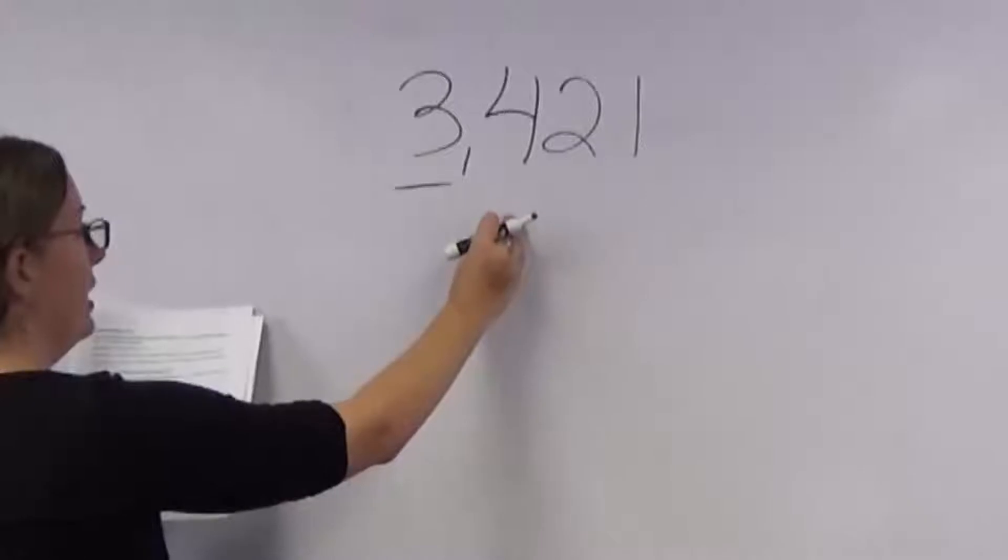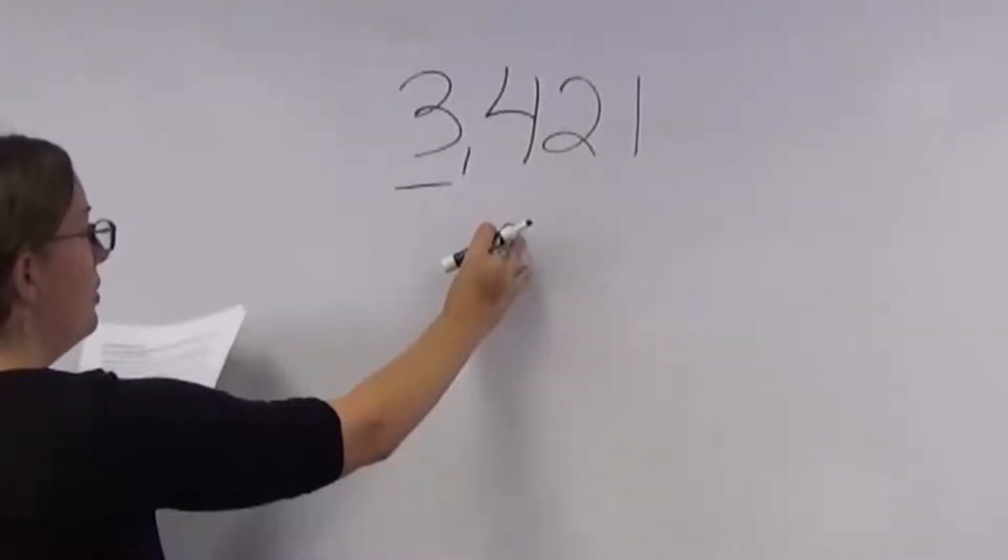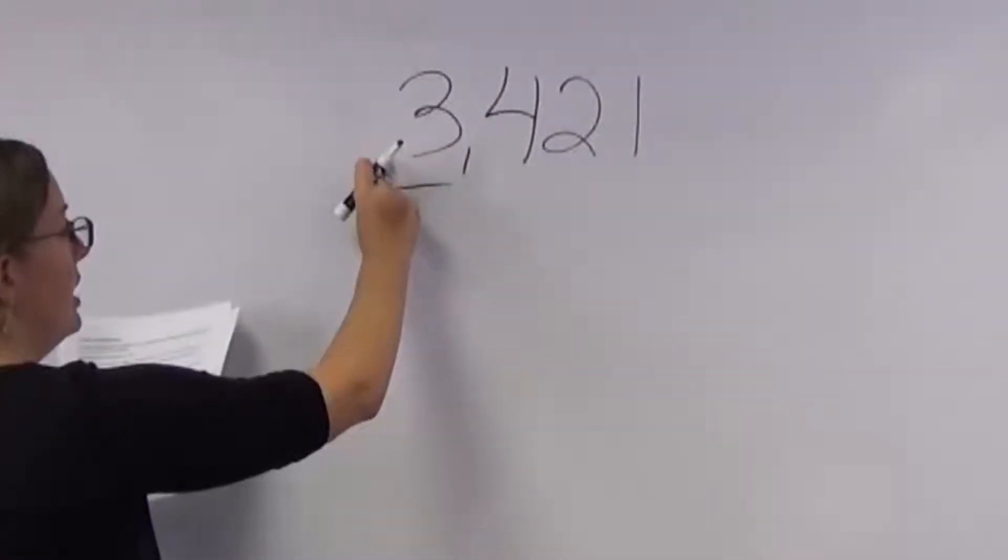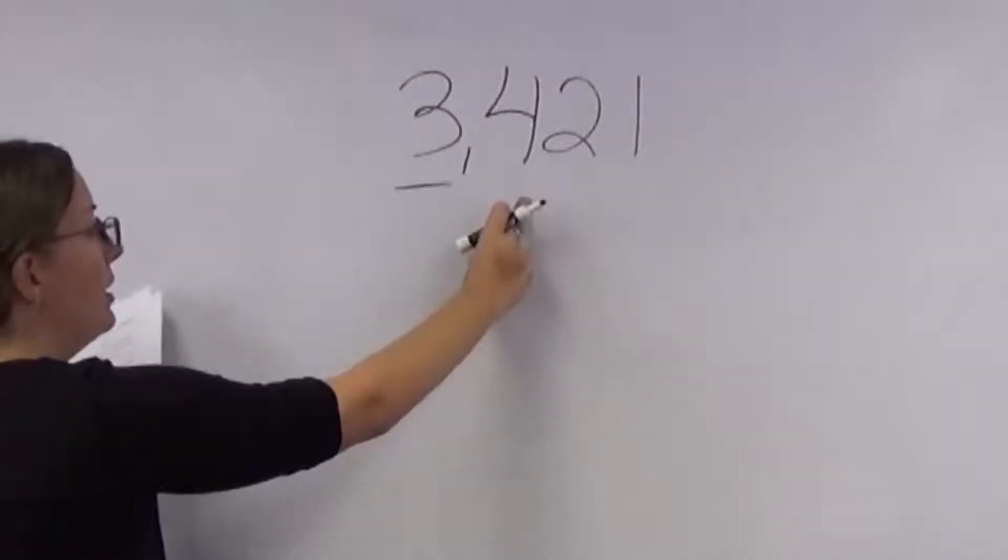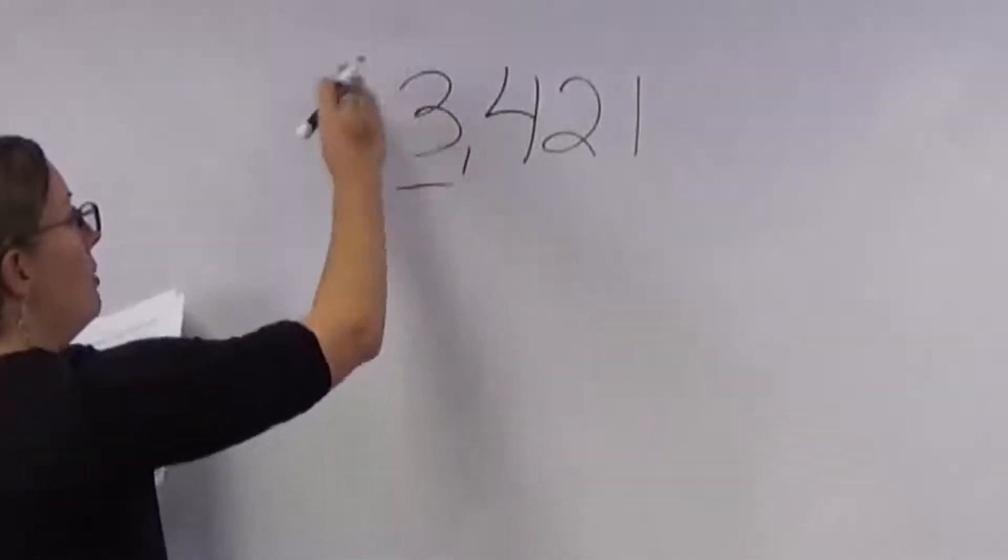the digit to the immediate right, if that number is a four or below, then this number would stay the same. If this number is a five or higher, then this number would go up one.